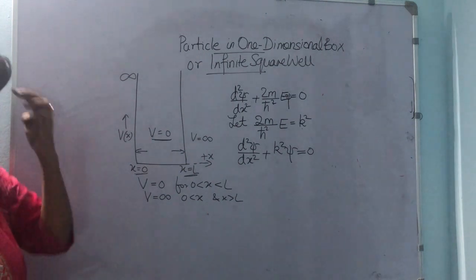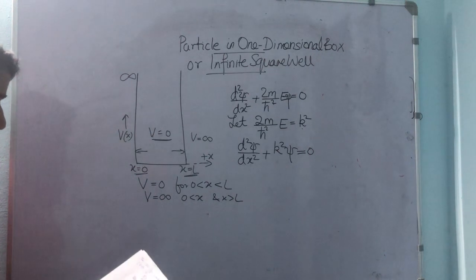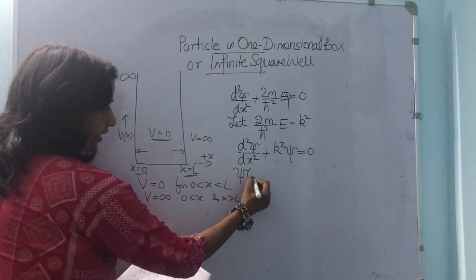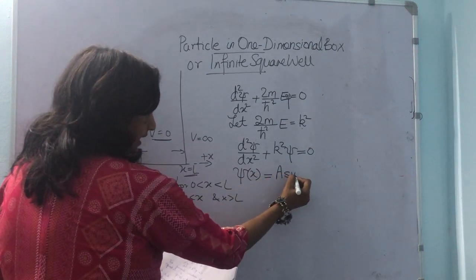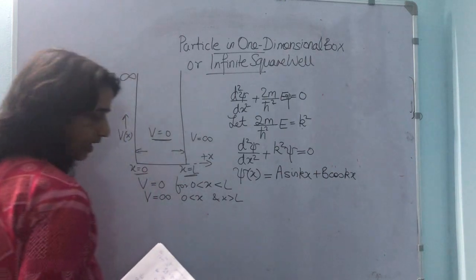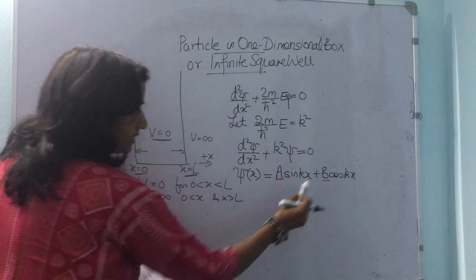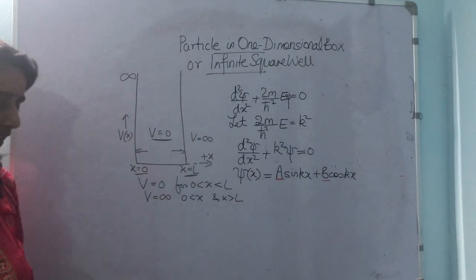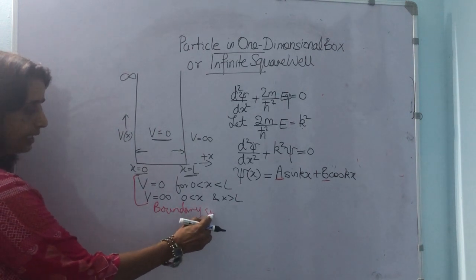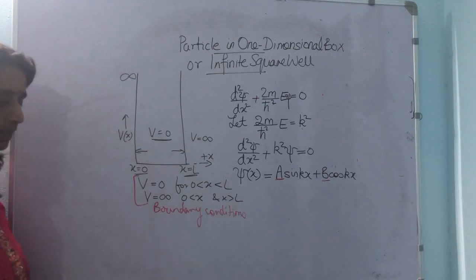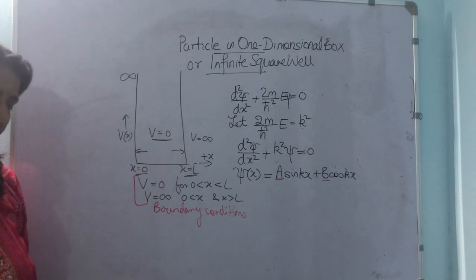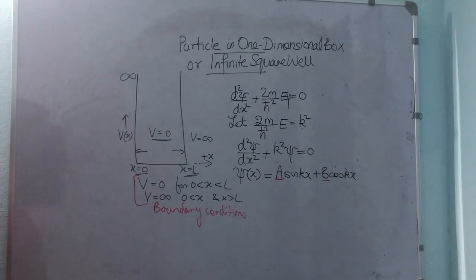The general solution of this differential equation is φ(x) equal to A sin(kx) plus B cos(kx). Our next aim is to evaluate the constants A and B by applying the boundary conditions given for the particle trapped inside the one dimensional well. The particle cannot have infinite energy — it neither penetrates the wall nor exists outside the box.